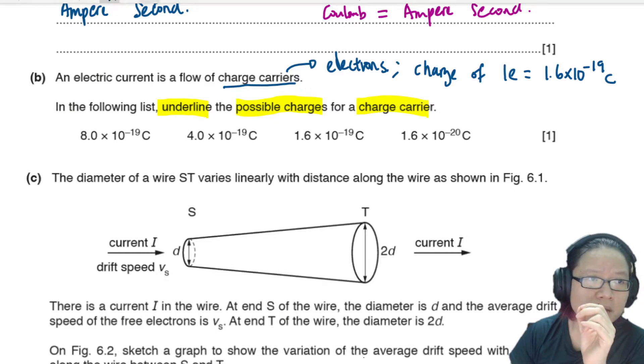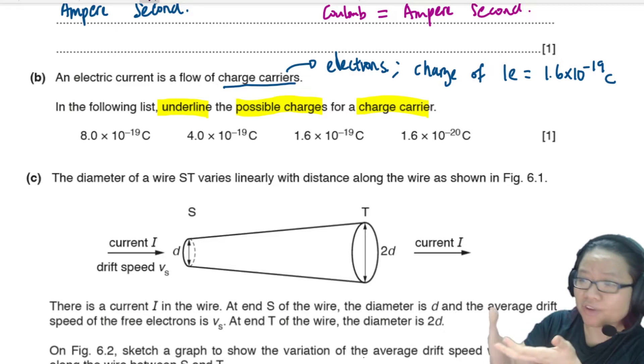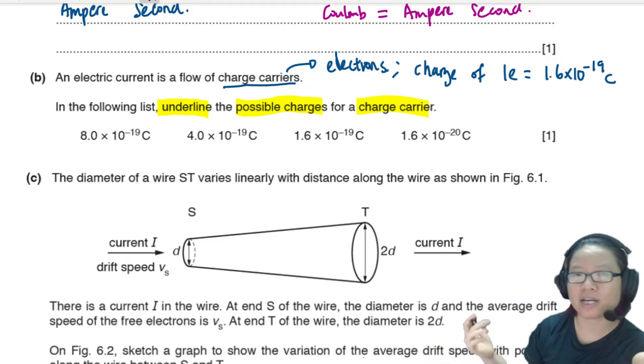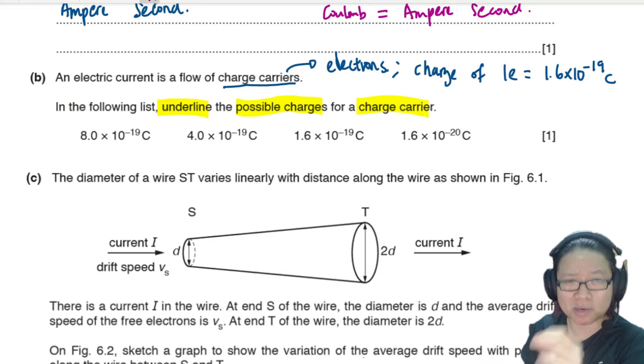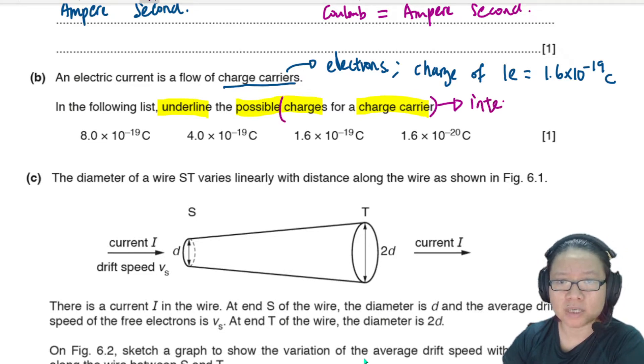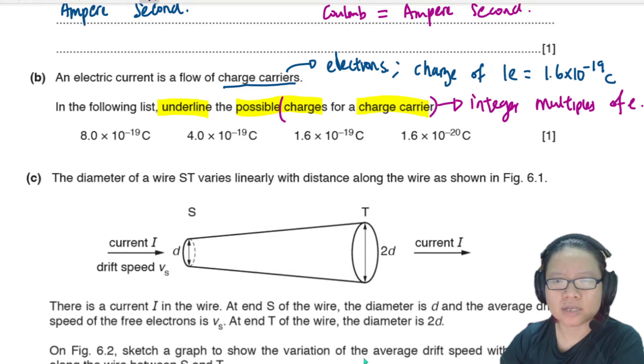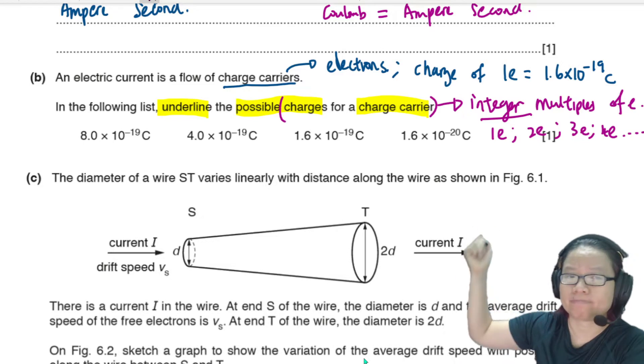And if you think about this, charge carriers must have, maybe for example, you have two valence electrons, or you have three valence electrons. So whatever my charge carrier is, it has to be multiples of E, integer multiples. So the charges of the charge carrier must be integer multiples of E. What does that mean? Integer multiple means 1E, or 2E, or 3E, or 4E.